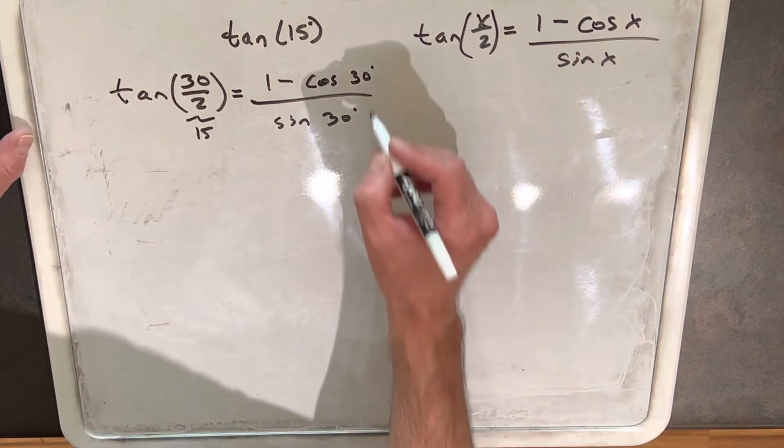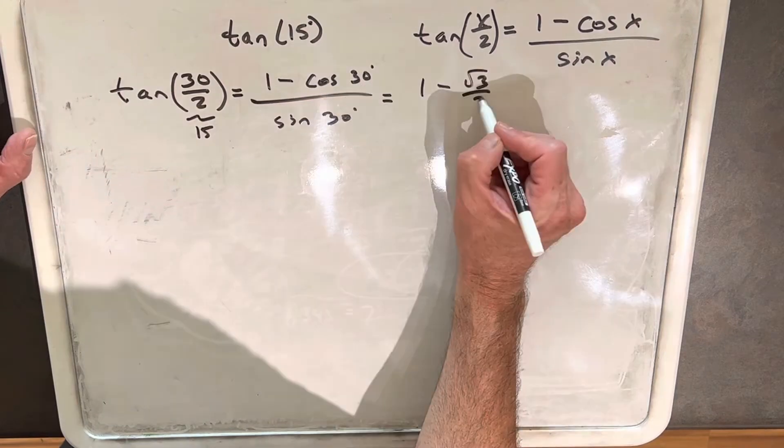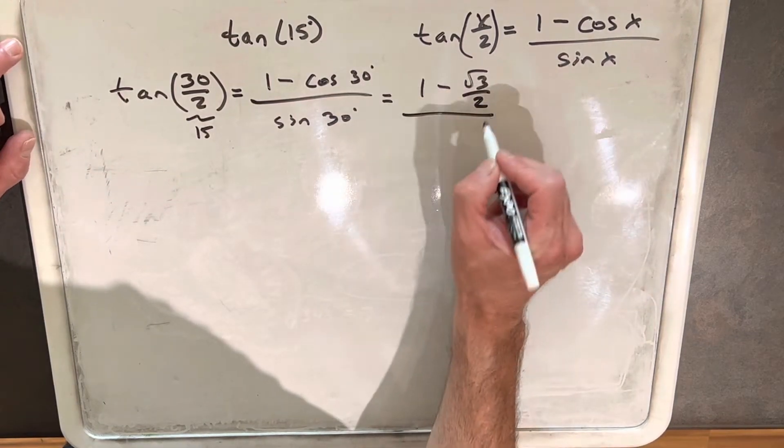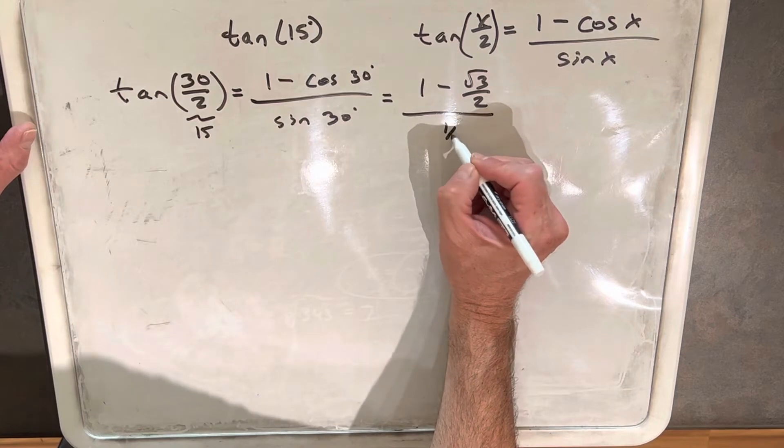So cosine of 30 is going to be square root of 3 over 2. Square root of 3 over 2 in the numerator, and then the denominator, sine of 30, is going to be 1 half.